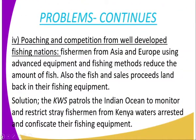The fourth problem is poaching and competition from developed fishing nations. Fishermen from Asia and Europe use advanced equipment and fishing methods, which reduces the amount of fish available. The solution is that the Kenya Navy and Patrol Services patrol the Indian Ocean to monitor and restrict foreign fishermen from entering Kenyan waters, where they are arrested and their fishing equipment is confiscated.